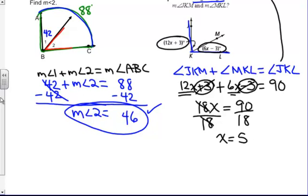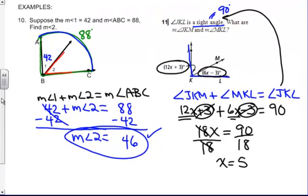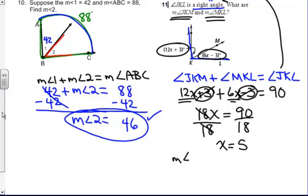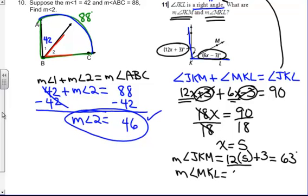Now don't forget, you're not done with your algebra. You always have to plug it in, plug it in. They want to know these two measures. So the measure of angle JKM is equal to 12 times 5 plus 3. This is 60 plus 3 is 63 degrees. And the measure of angle MKL is equal to 6 times 5 minus 3, 6 times 5 minus 3 is 30, take away 3, is 27.